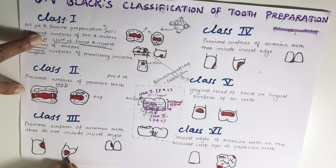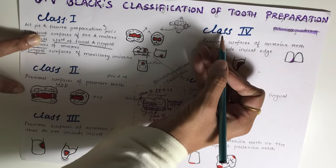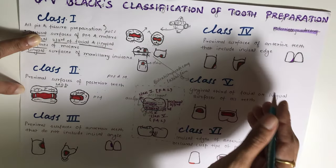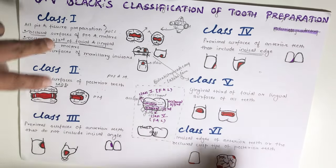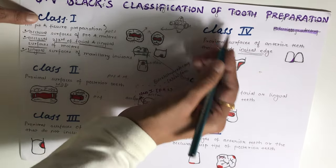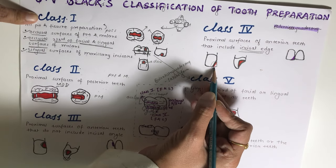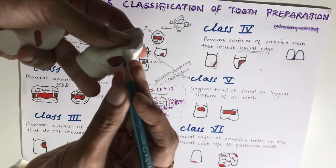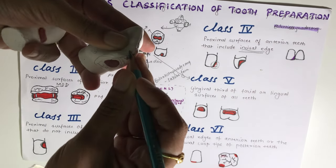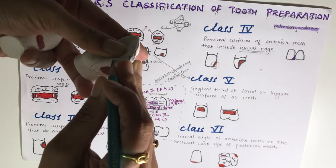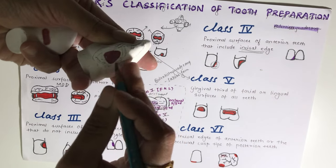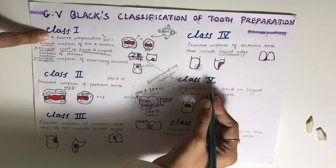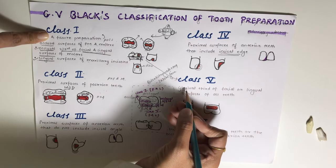Class 4 is also a preparation on the proximal surface of anterior teeth, but in this case the incisal edge or incisal angle is involved. If you are doing the preparation and it involves the incisal edge, that will be your Class 4.